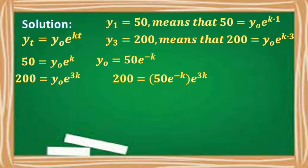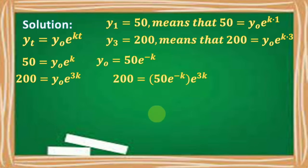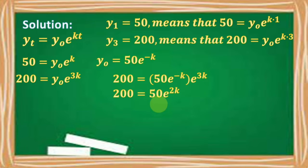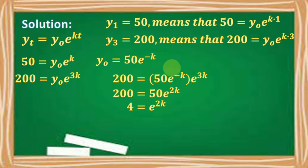Adding the exponents e^(−kt) and e^(3kt) gives 200 = 50 · e^(2kt). Dividing both sides by 50, we get 4 = e^(2kt), which can be written as 4 = e^(kt·2).